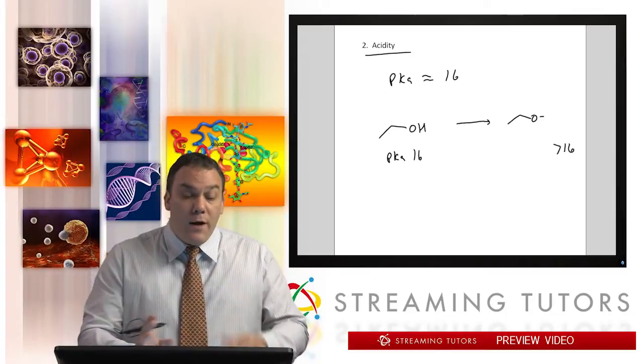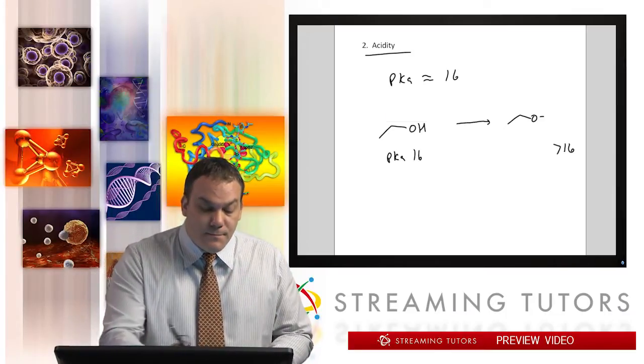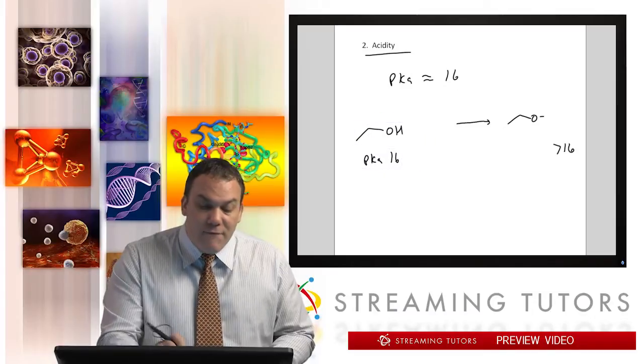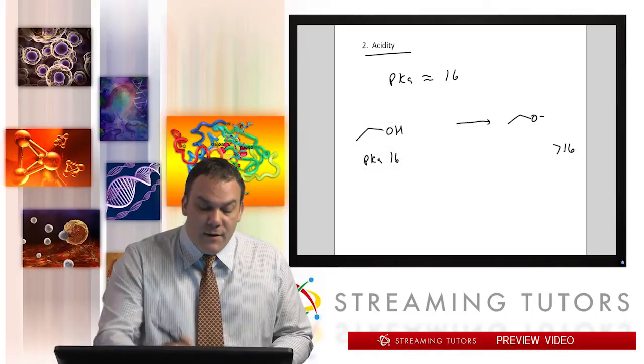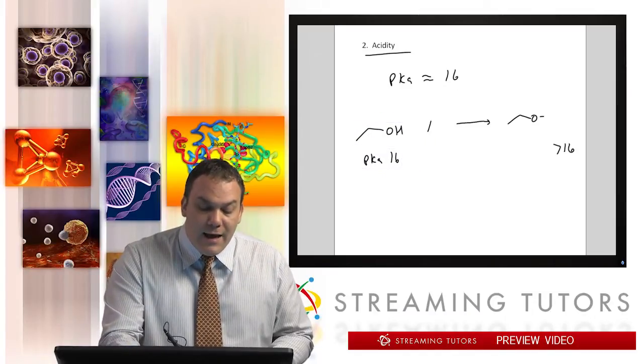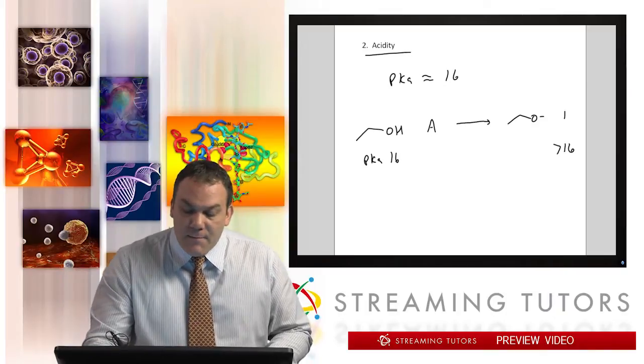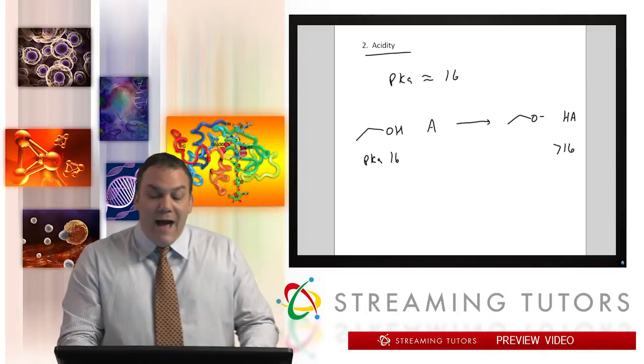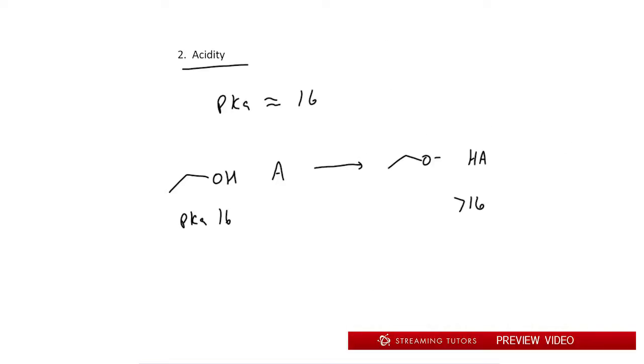One most common example is if you have, let's say, a carbon that's negative. If I have A minus, I'll do it generically, then this becomes HA and we have to make sure it's greater than 16. So for A minus, it could be a carbon, but what it does is just pull off the H and this becomes negative.